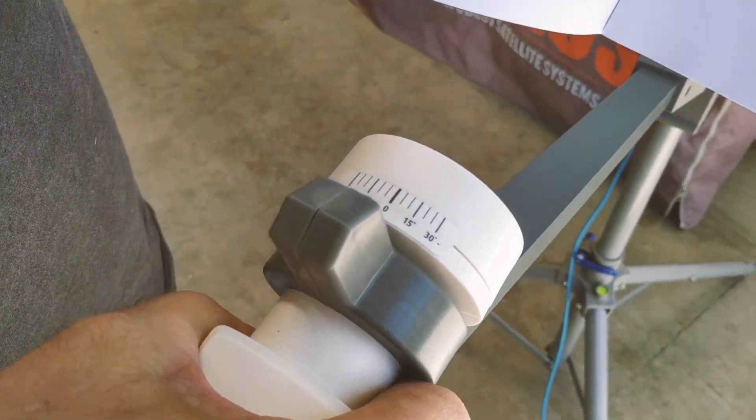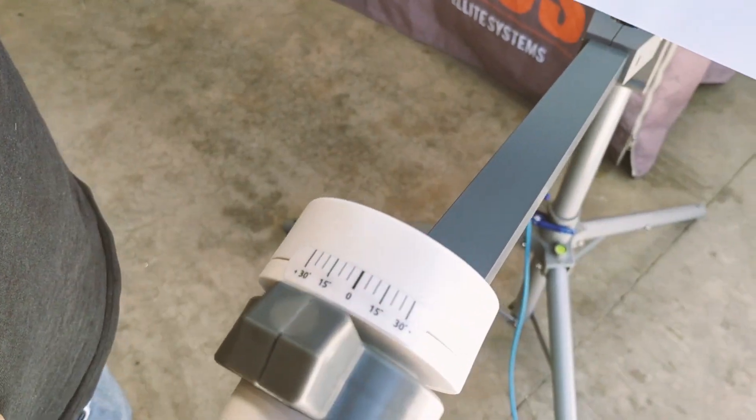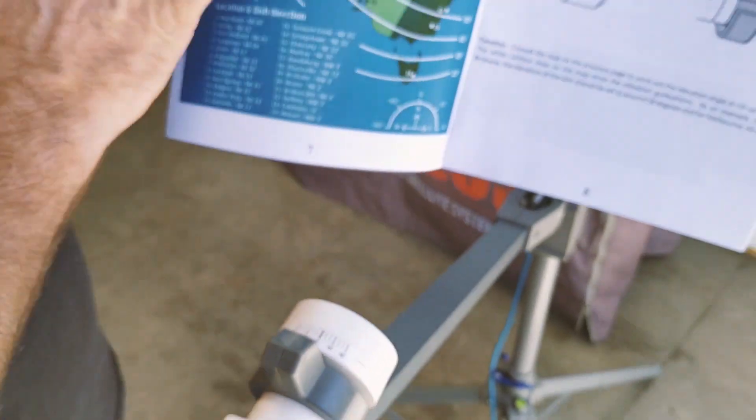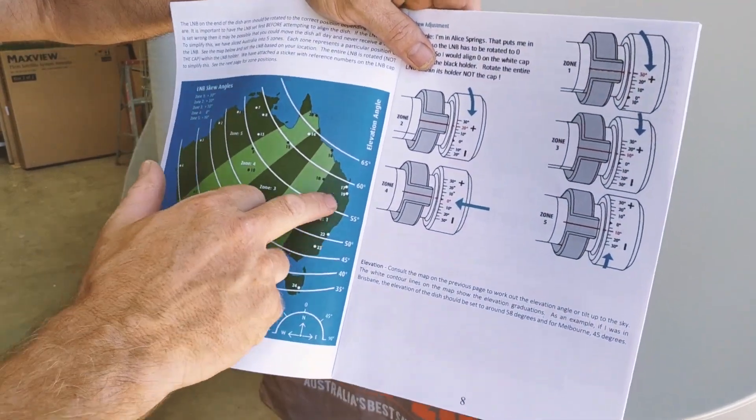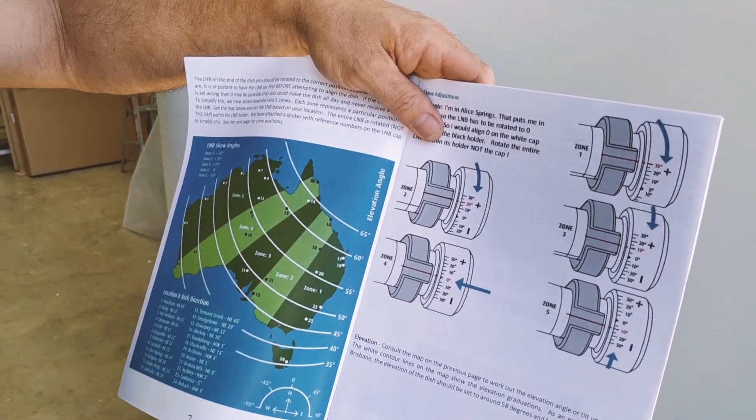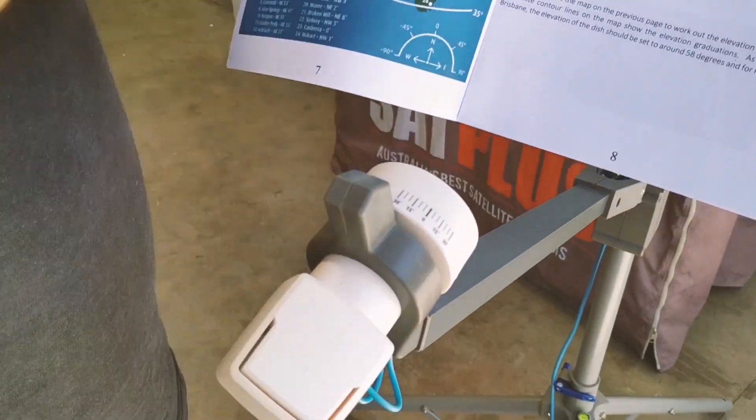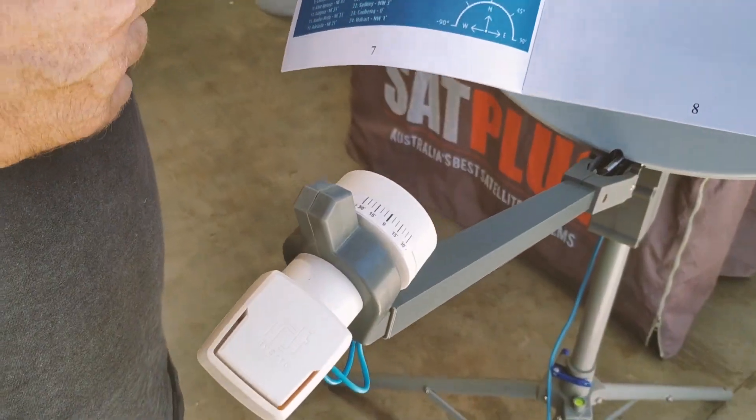So that applies no matter where you are. That rule applies all around the country. Just make sure you look at what zone you're in first, set the LNB to the right position, go out, align up your dish in three minutes and watch TV.